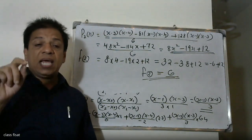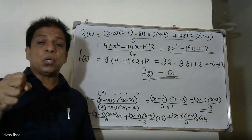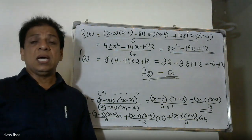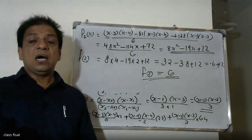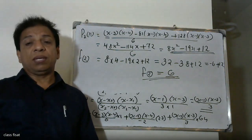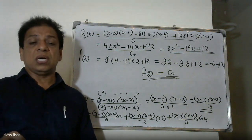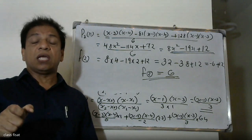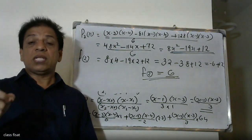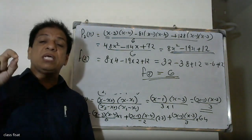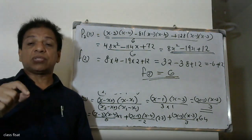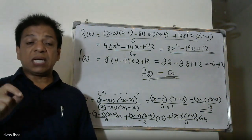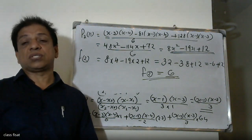To summarize the Lagrangian interpolation method: the formula is p_n(x) = sigma from i = 0 to n of L_i(x). We identify x0, x1, x2 and y0, y1, y2, then compute L0(x), L1(x), L2(x). L0(x) = (x−x1)(x−x2) / [(x0−x1)(x0−x2)], L1(x) = (x−x0)(x−x2) / [(x1−x0)(x1−x2)], and L2(x) = (x−x0)(x−x1) / [(x2−x0)(x2−x1)]. Substitute and simplify to get f(x).